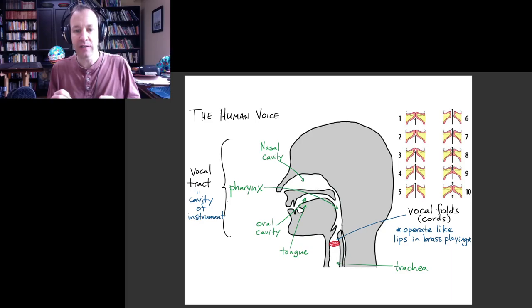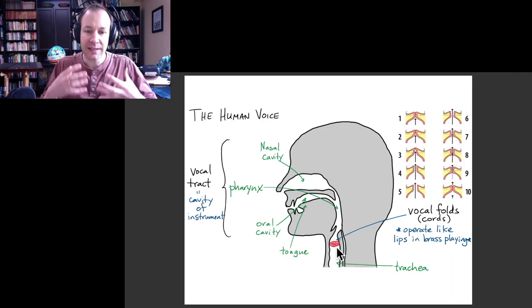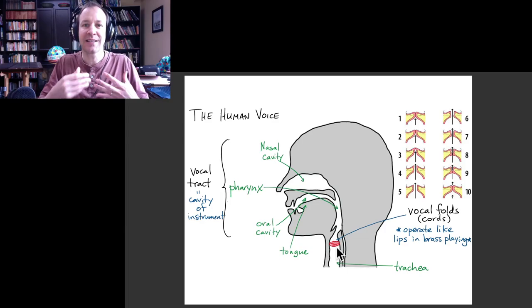What we talked about in previous videos is that you can basically divide the sound production mechanism in singing in the human voice into two parts. The first part would be the vocal folds, and these are in your trachea in the top part called the larynx or voice box.